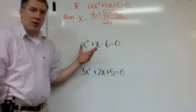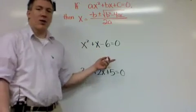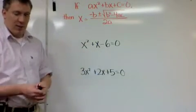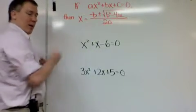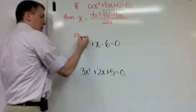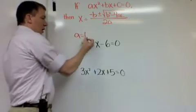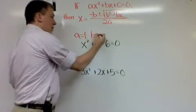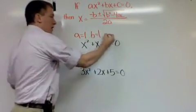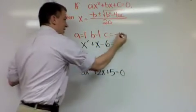So let's go ahead and use it. Here I have an equation: x squared plus x minus 6 equals zero. So first I'm going to identify my a, b, and c. ax squared, so a is 1, 1x squared. bx, 1x. c is negative 6.